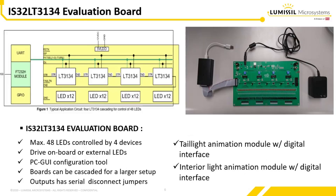Lumisil offers for the IS32LT3134 an evaluation board that consists of a maximum of 48 LEDs controlled by 4 devices. The design can control onboard LEDs or external LED driver devices. Configuration and control is done with a PC-based GUI configuration tool. It is possible to cascade multiple evaluation boards for a larger setup to play both cascaded and simultaneous animations. The outputs have serial disconnect jumpers and can be configured by GUI to either one-fail-all-fail or one-fail-all-continue.